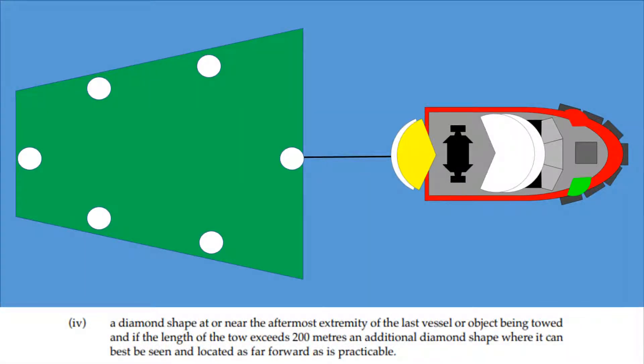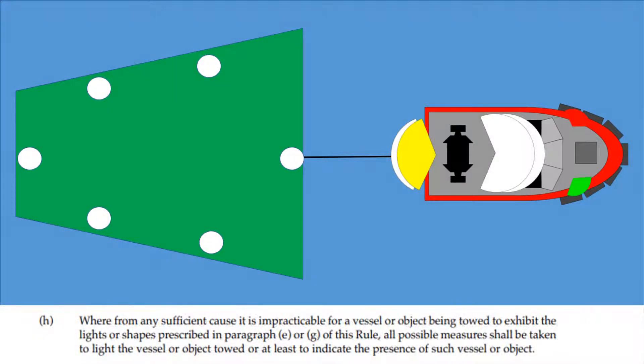A diamond shape at or near the aftermost extremity of the last vessel or object being towed, and if the length of the tow exceeds 200 meters, an additional diamond shape where it can best be seen and located as far forward as is practicable. Where from any sufficient cause it is impracticable for a vessel or object being towed to exhibit the lights or shapes prescribed in paragraph E or G of this rule, all possible measures shall be taken to light the vessel or object towed, or at least to indicate the presence of such a vessel or object.